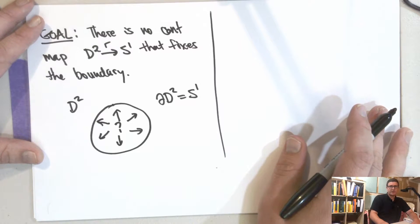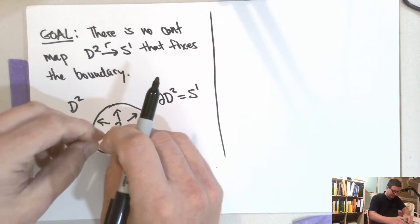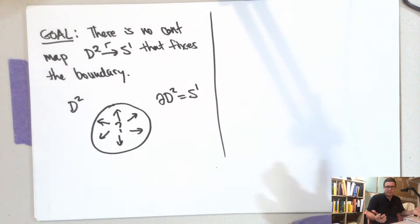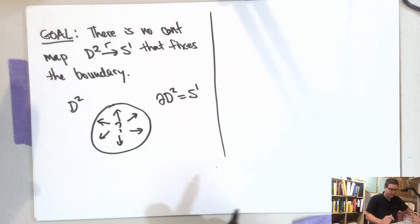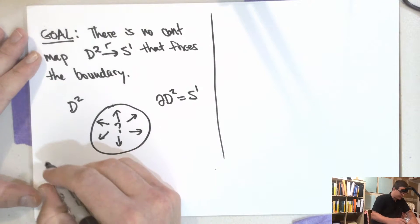And what we're proving is that there's no retract. So the idea is like if you're going to do this it'll have to break, and you'll have to like rip the disk in some way. So let me give you the official definition of a retract.